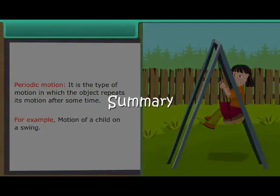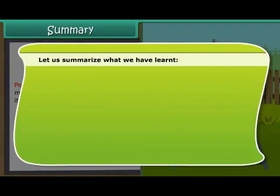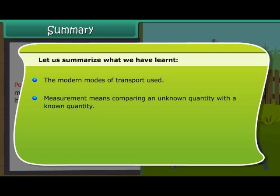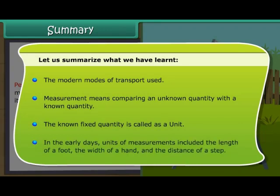Summary. Let us summarize what we have learnt. The modern modes of transport used. Measurement means comparing an unknown quantity with a known quantity. The known fixed quantity is called a unit. In the early days, units of measurements included the length of a foot, the width of a hand, and the distance of a step.